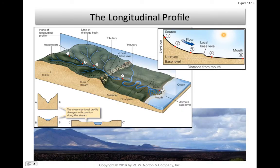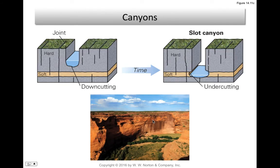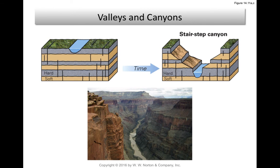Here's another example of that longitudinal profile going from the source at the headwaters to the mouth of the river. Stage one streams are up in the steeper gradient area with V-shaped valleys. If the rock is relatively hard, you'll see a steeper slope; if it's softer, you'll see more slumping and landsliding with a wider valley. In very hard rock, you get near-vertical slot canyons — here's an example in Navajo sandstone.